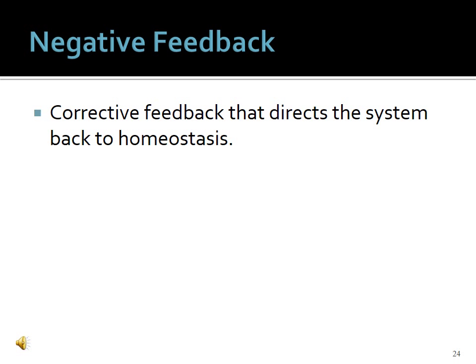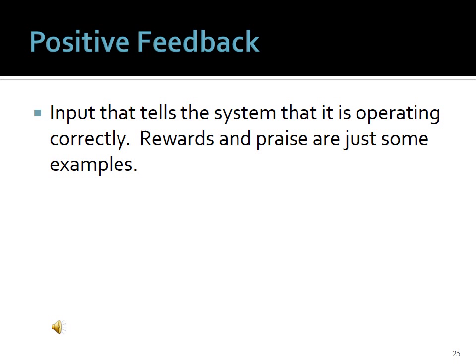A low test score is an example of negative feedback — feedback that directs the system back to homeostasis. Positive feedback is input that tells the system it is operating correctly; rewards and praise are examples. A raise or positive evaluations at work would be positive feedback from one system rewarding another for favorable behaviors. It is common for the same behavior to elicit both positive and negative feedback: a teenager may receive positive feedback from smoking cigarettes from one peer group and negative feedback from other peers and most adults.